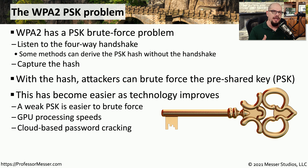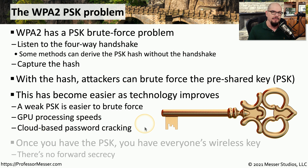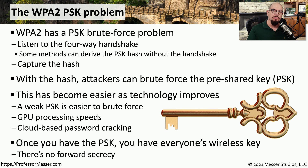One constant challenge in protecting against brute force is keeping up with changes in computing speed. If you're using a short pre-shared key or a common dictionary word, those would be very easy to brute force. We've also been able to increase brute force attack speed by using graphics processing units or cloud-based password cracking. If someone captures the hash, brute forces it, and determines the pre-shared key, they would effectively have access to the rest of the wireless network data.